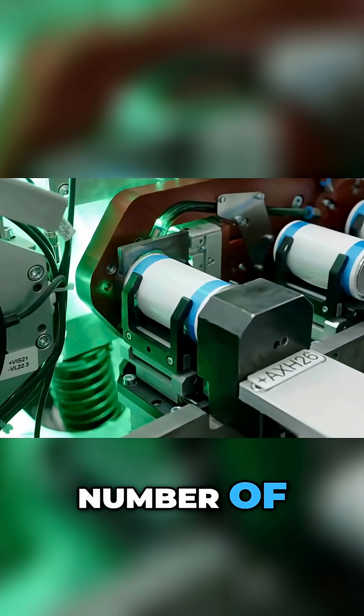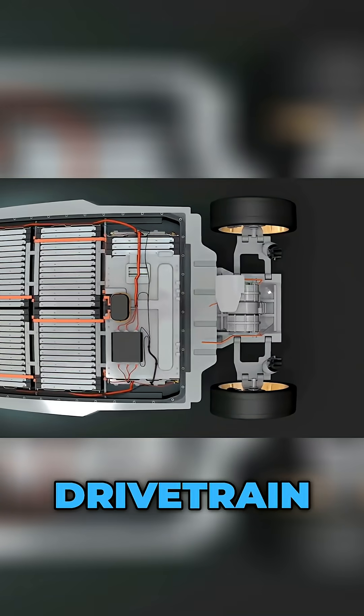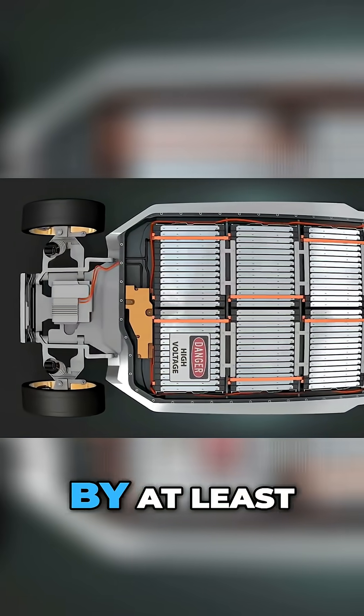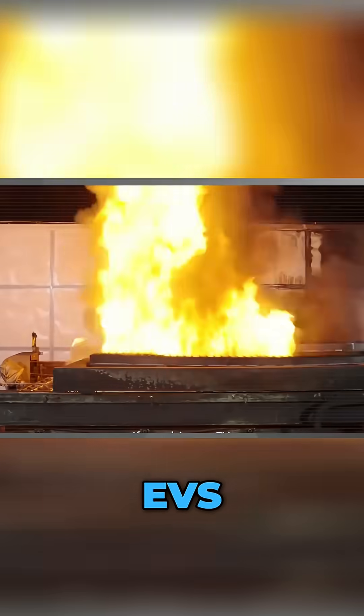potentially bringing the total number of chips down to under 30. All of these efficiencies, from drivetrain to electronics to manufacturing, combine to cut total production cost by at least $8,000 to $10,000 per vehicle compared to current EVs.